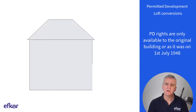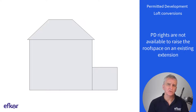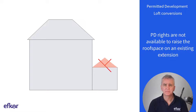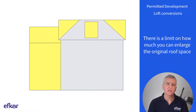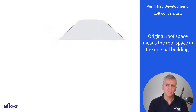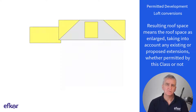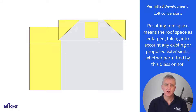PD rights are only available to the original building, or as it was on 1st of July 1948. This means that PD rights are not available to raise the roof space on an existing extension. There's a limit on how much you can enlarge the original roof space. Original roof space means the roof space in the original building. Resulting roof space means the roof space as enlarged, taking into account any existing or proposed extensions, whether permitted by this class or not.